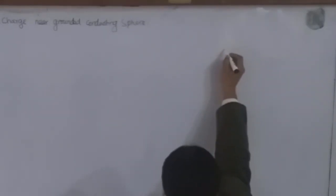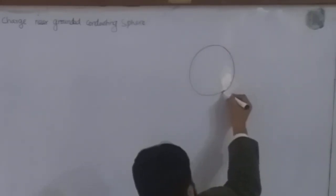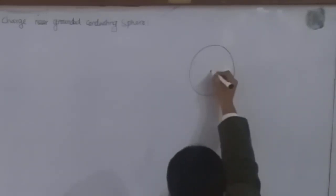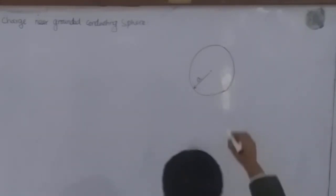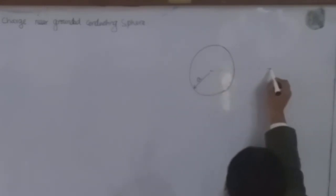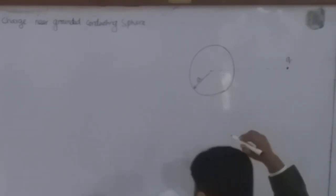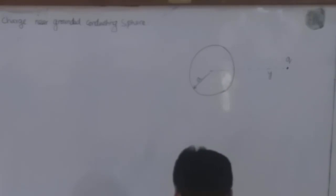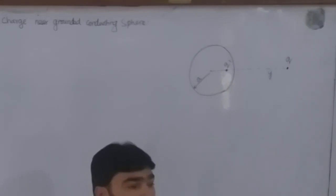Consider a sphere with radius a. This is one of the axes, and we have a positive charge Q which is at a distance y from the center of this sphere. We place another charge, which is the image charge Q prime.